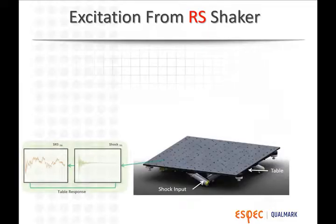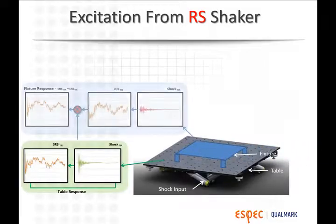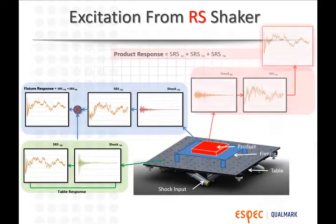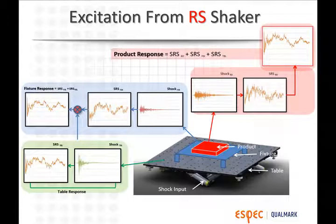The shocks cause all components in the product to ring at their own resonant frequencies, where fatigue accumulates fastest. These shocks and the resultant resonant excitation are what make RS vibration so effective for rapidly fatiguing product.